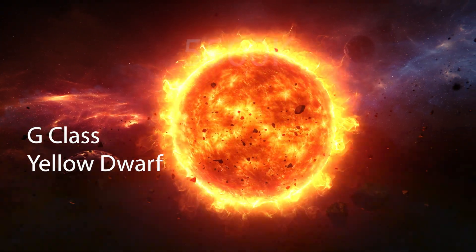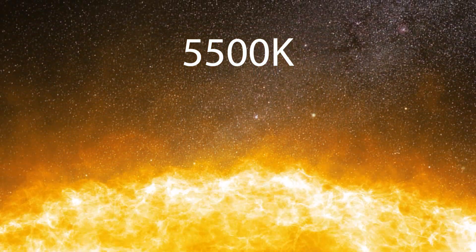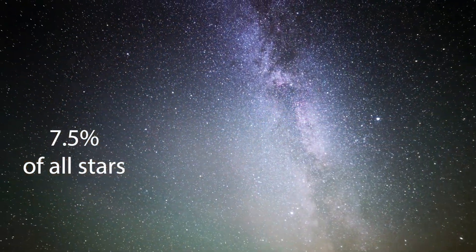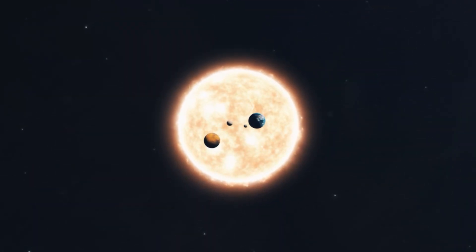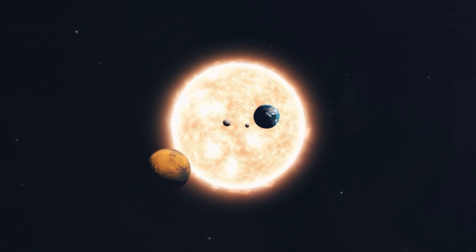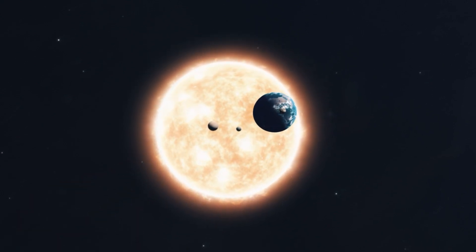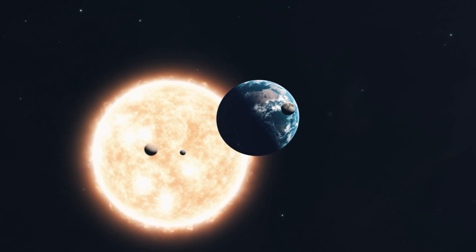Yellow stars burn at about 5,500 Kelvin and make up 7.5% of the 400 billion stars that exist in our Milky Way galaxy. Our solar system has eight planets, one of which can and does sustain life: our home planet Earth.